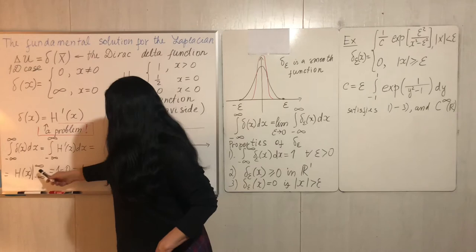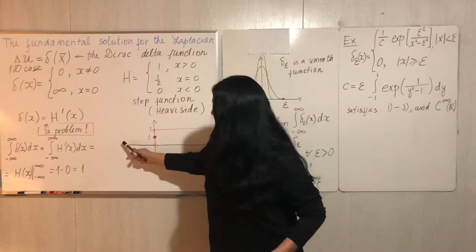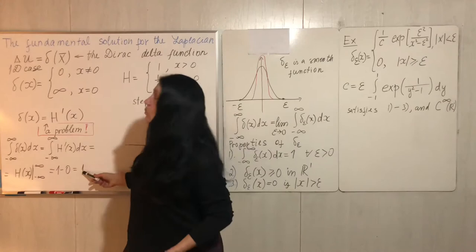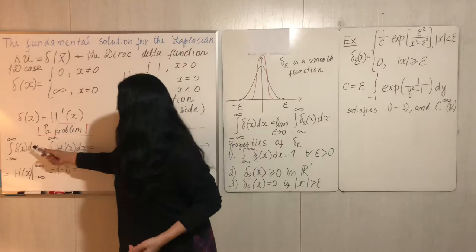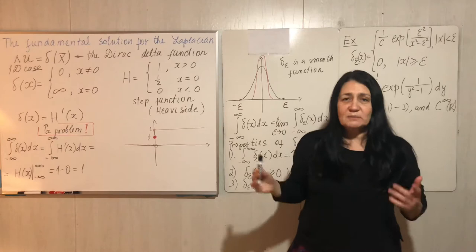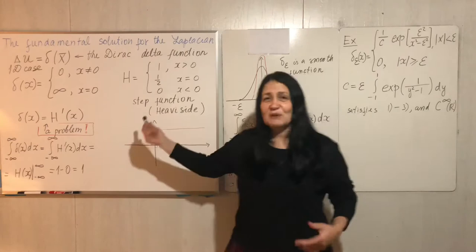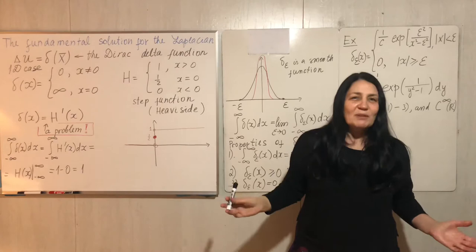Then it should be H evaluated at a large positive number minus a large negative number, which gives 1 minus 0 equals 1. So the integral of this function equals 1. But on the other hand, the function is 0 everywhere except for one point, and one point has measure 0, so it does not affect integrals. From that point of view, the integral must be 0. From one consideration it's 0, from another it's 1 — that's a problem. It's not a normal function, mathematicians said.